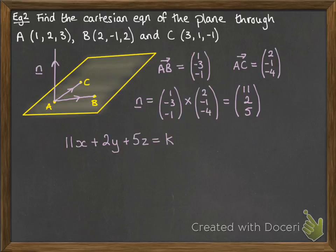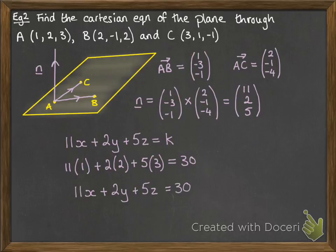So from our normal, we know that it's just 11x plus 2y plus 5z equals some constant. So now we've put in one of the coordinates that we know is on that plane. Since it has to satisfy that equation, we can then use that to work out our constant. So k is 30. So here is the final equation of the plane.